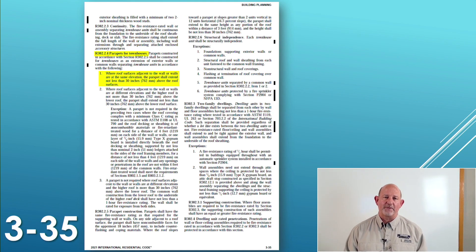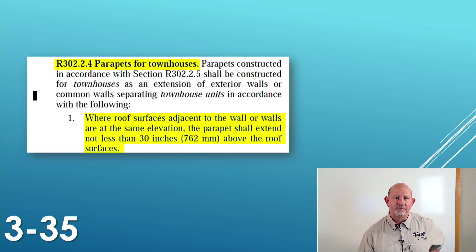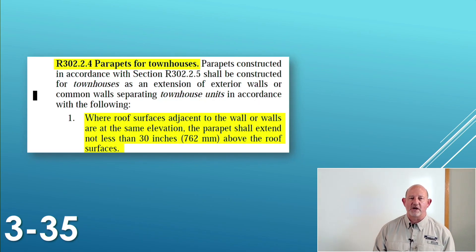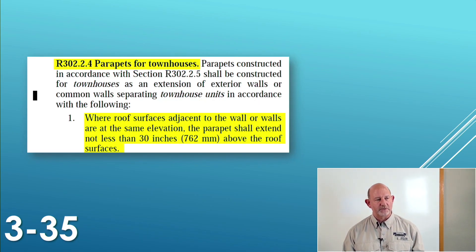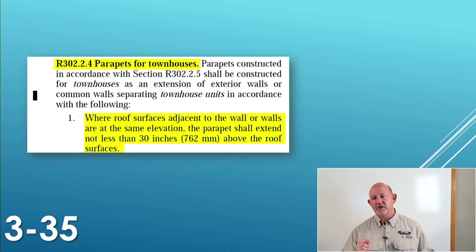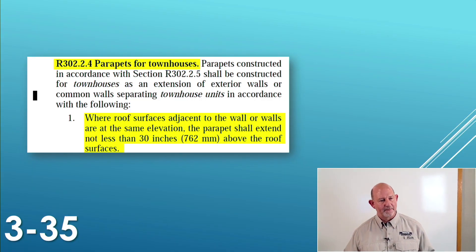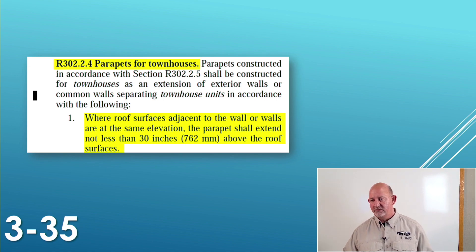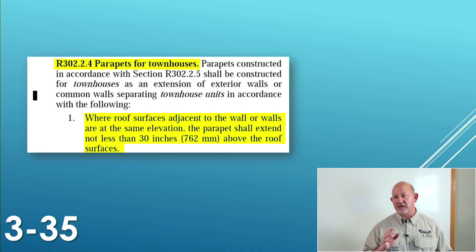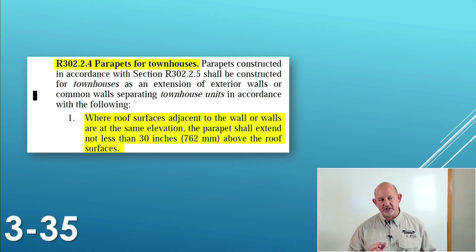Let's go to the top of page 35. We've got R302.2.4, parapets for townhomes. They didn't have to tell me this parapet was for a townhome — because of context of the code.